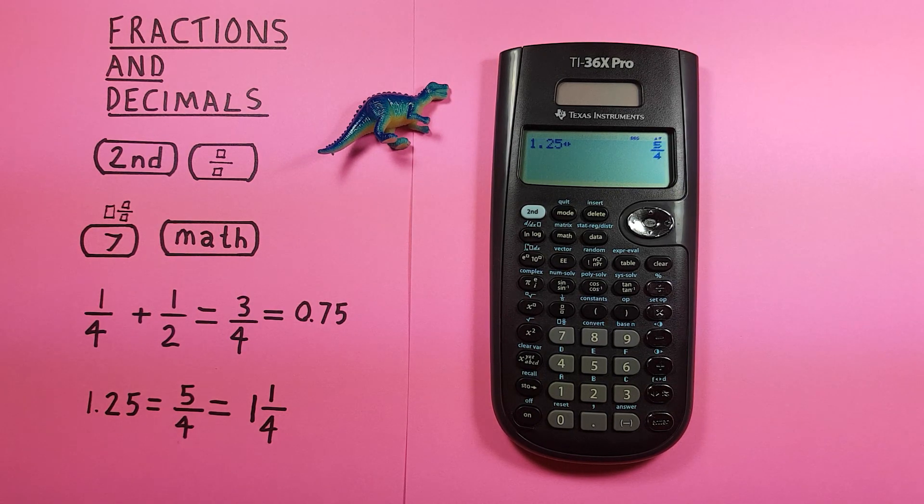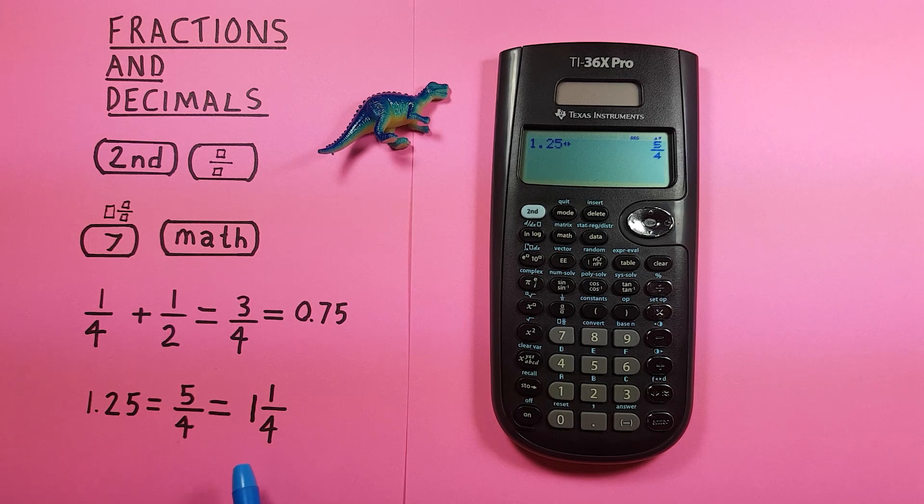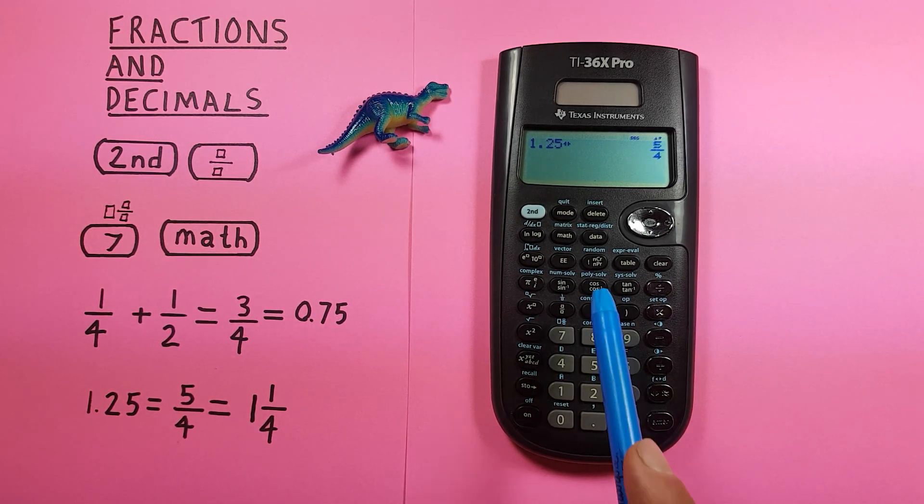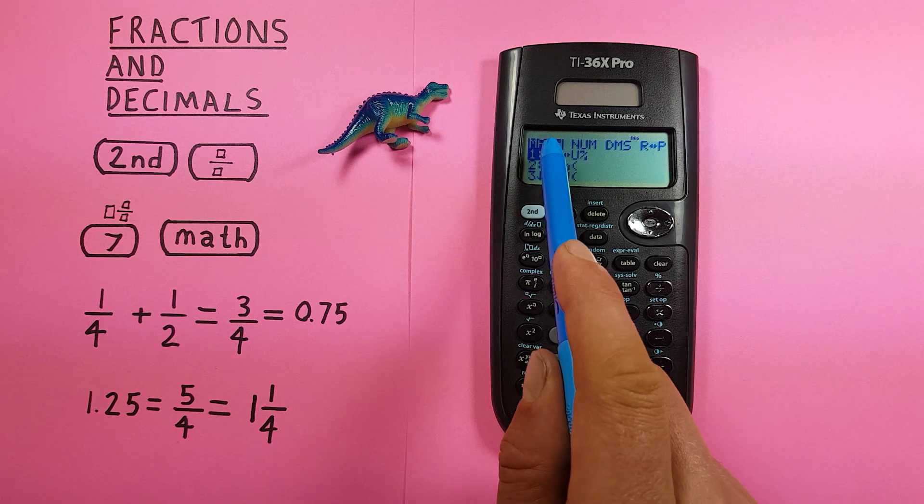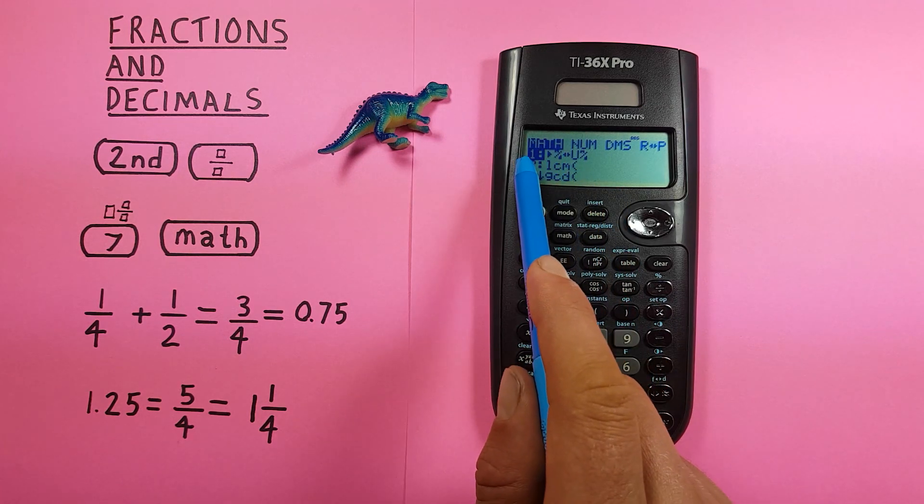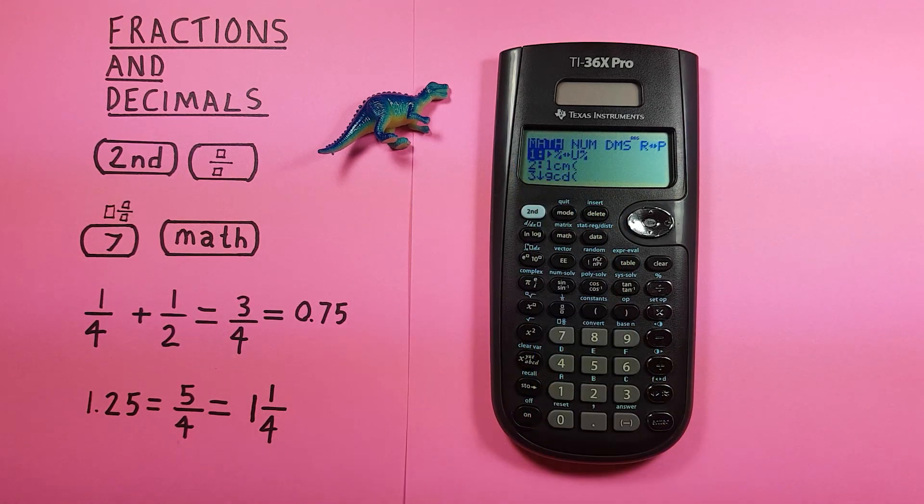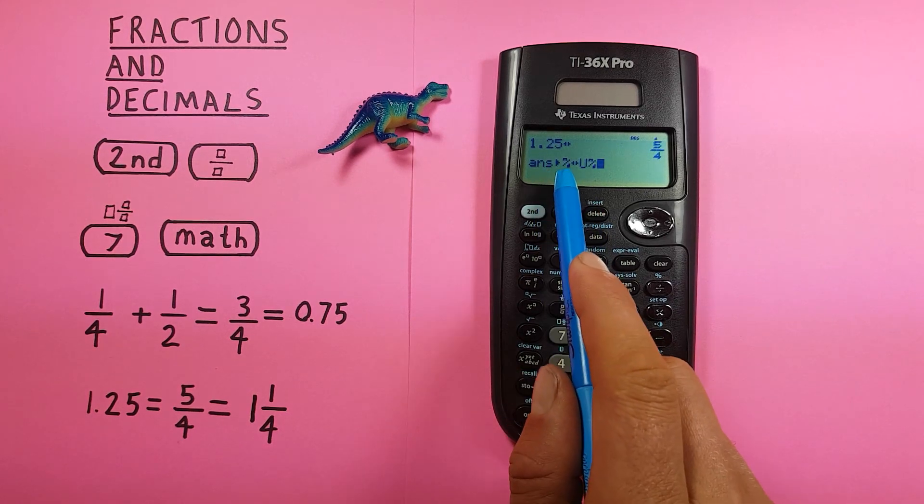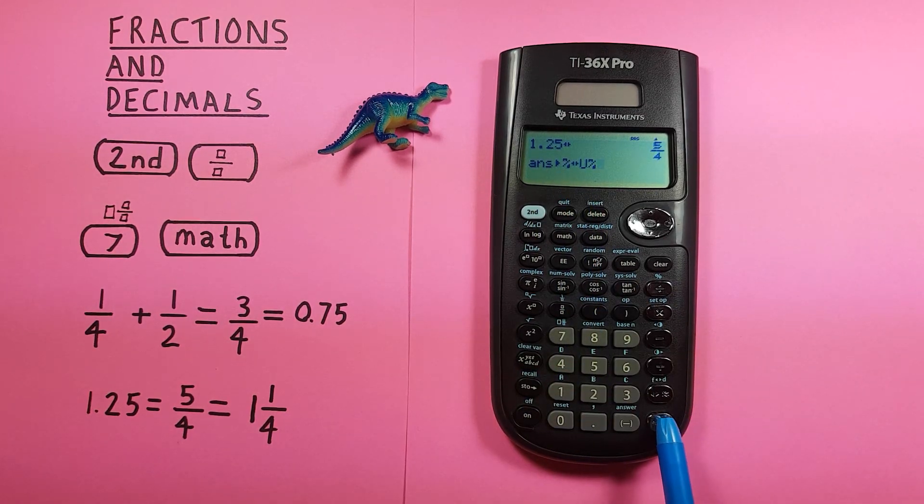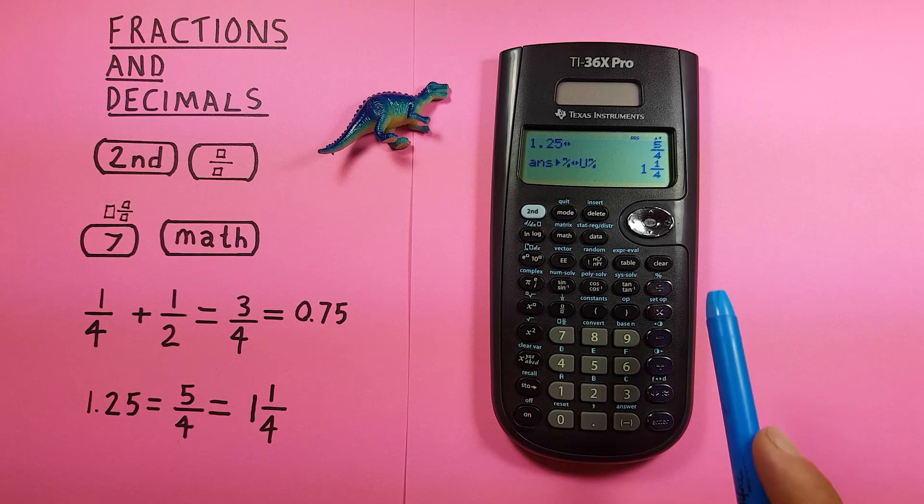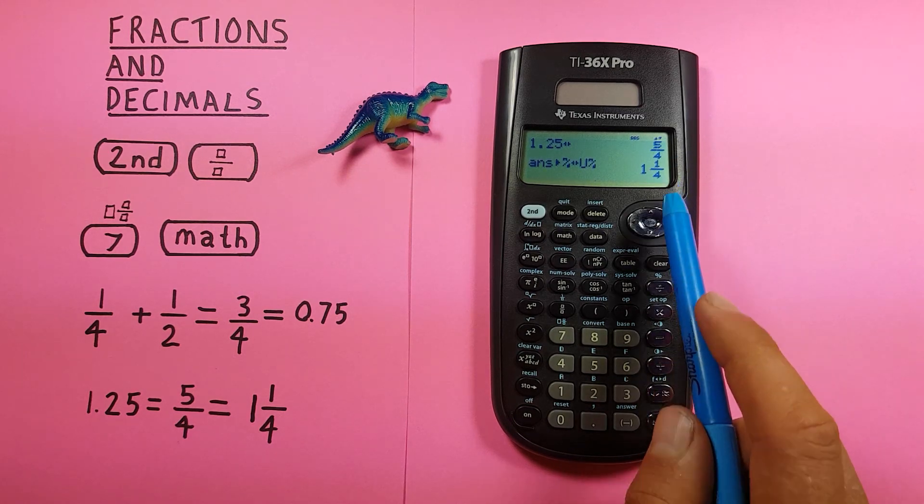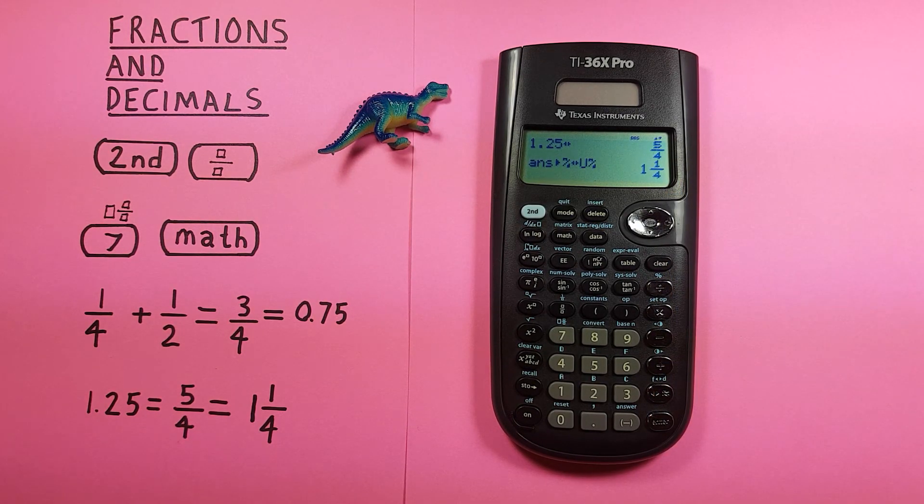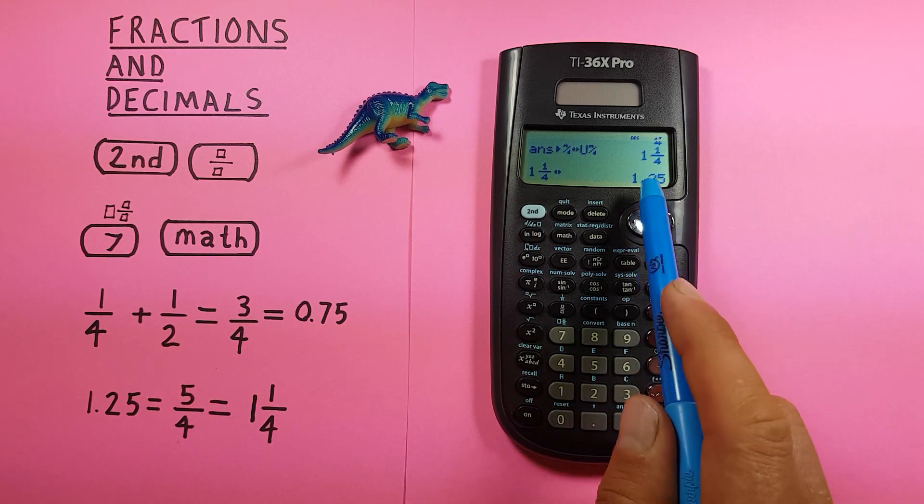For a mixed fraction, press math to bring up the menu. The first option is converting between mixed and improper fractions. Press enter on that and you'll see the symbol. Press enter again and we've converted 5/4 to 1 and 1/4. Press it again to convert back to decimal.